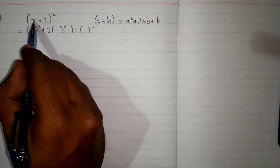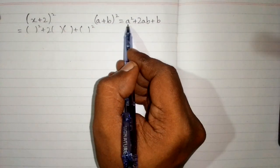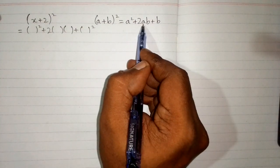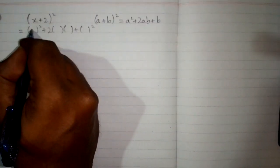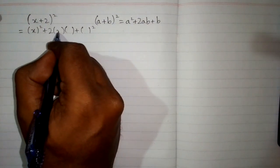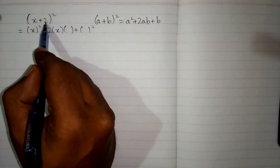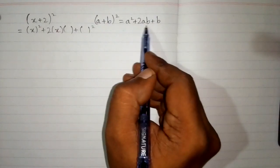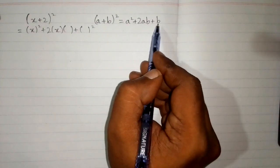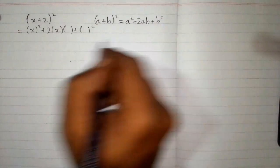So we have x in place of a, so we will put x over here and over here. So we will write x in place of a and then we can see that we have 2 in place of this b. So we will put 2 over here and over here. Sorry, this is b square.